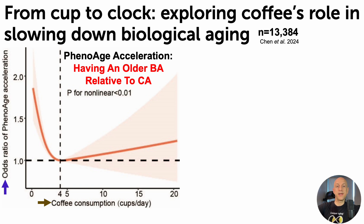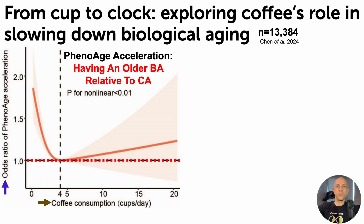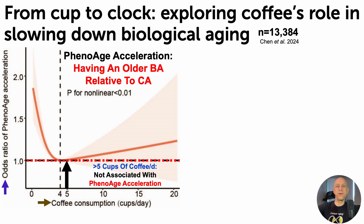That's plotted against coffee consumption in cups per day on the x-axis. In terms of what's significant, we put up that red line at the odds ratio of 1. We can see that for people who drank more than 5 cups of coffee per day, this was not associated with phenowage acceleration — having an older biological age relative to the chronological — as that shaded red region completely overlaps with the odds ratio of 1.